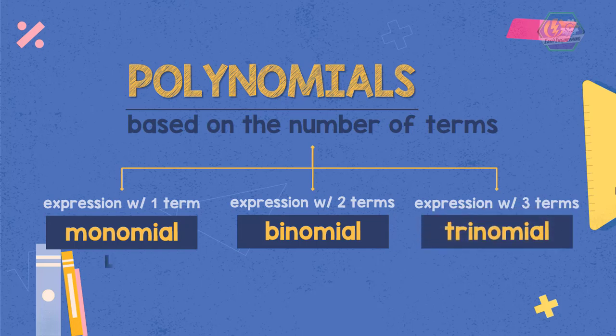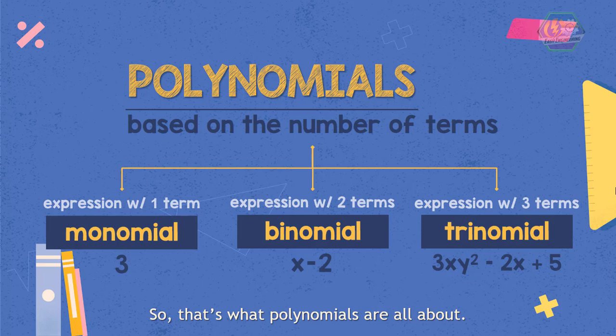If we have an expression 4x, this is called a monomial. Even a whole number like number 3, for example, is called monomial. x minus 2 is an example of binomial because it has two terms, which is x and 2. And 3xy squared minus 2x plus 5 is an example of trinomial because it has three terms.